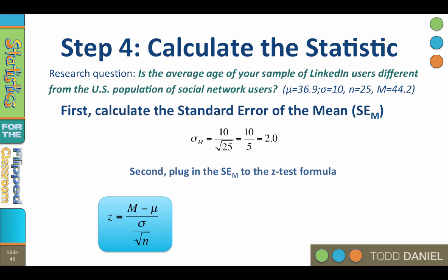Second, we will plug in the standard error of the mean to the z-test formula. z equals 44.2 minus 36.9 divided by 2. So this is 7.3 divided by 2, or 3.65. So our z equals positive 3.65.